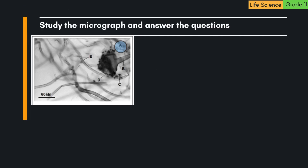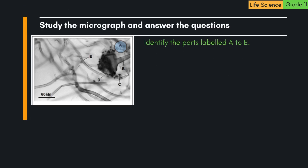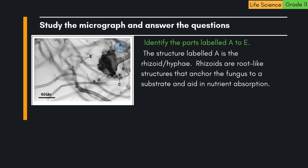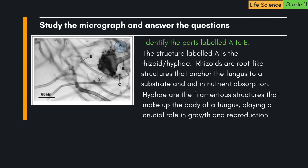Study the micrograph and answer the questions. Question: Identify the parts labelled A to E. 1. The structure labelled A is the rhizoid hyphae. Rhizoids are root-like structures that anchor the fungus to a substrate and aid in nutrient absorption. Hyphae are the filamentous structures that make up the body of a fungus, playing a crucial role in growth and reproduction.